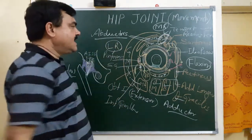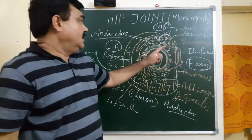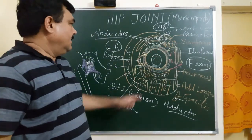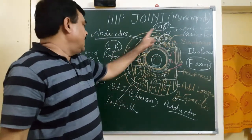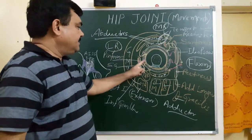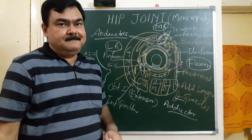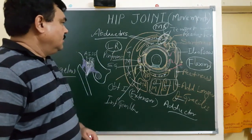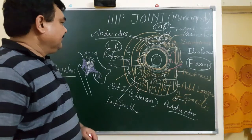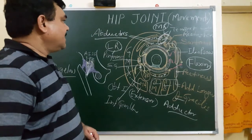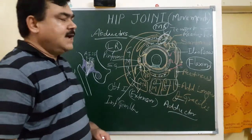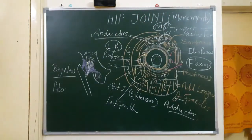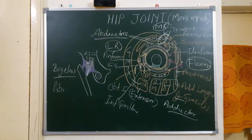So these muscles are the medial and lateral rotators of the hip joint. This is all about the movements at the hip joint.